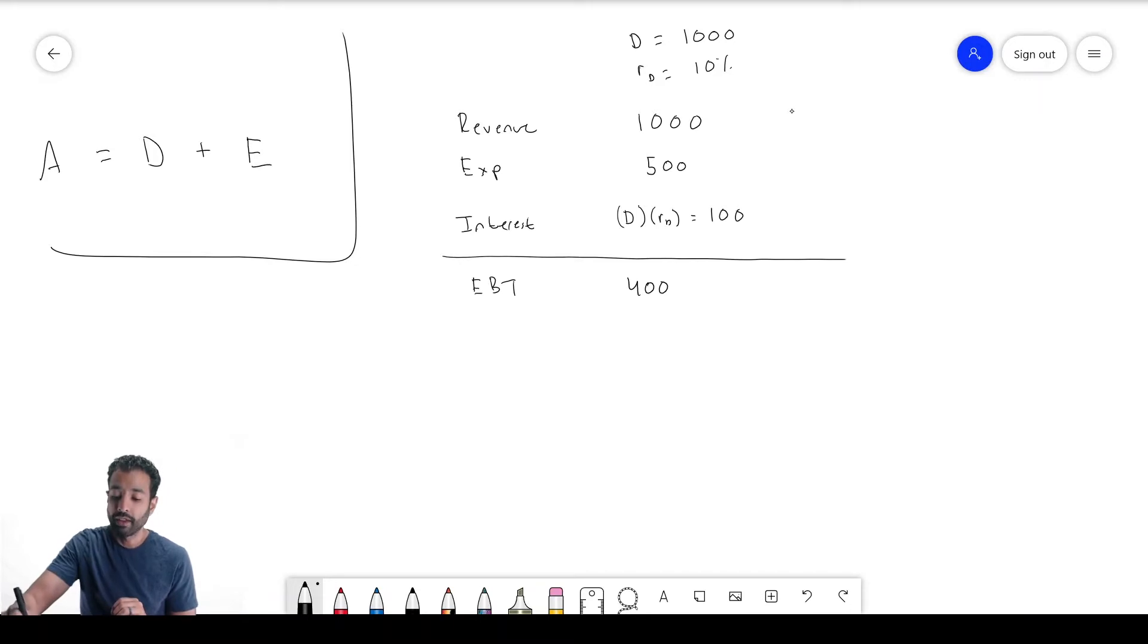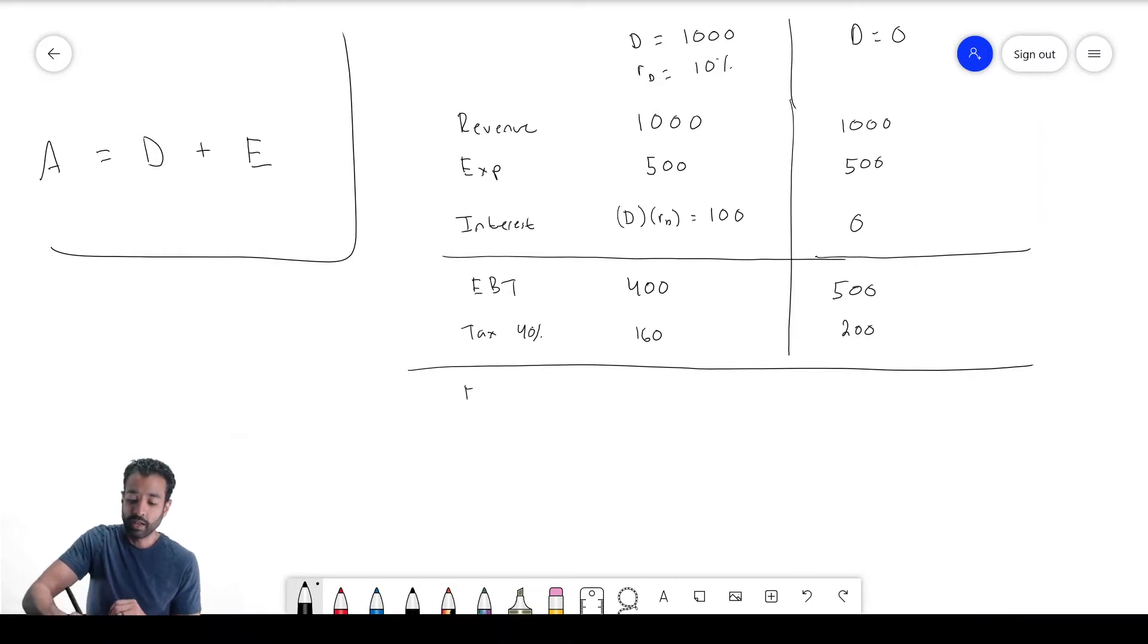Now let's look at a world where debt equals zero. Same $1,000 revenue, expenses of $500, interest is zero because there's no debt. Now your earnings before taxes is $500. Let's assume we have 40% tax. 40% times 400 is $160, and 40% times 500 is $200. Therefore, your earnings after tax is $240 in the first scenario. Here your earnings after tax is $300.